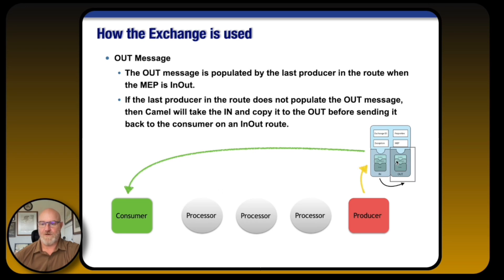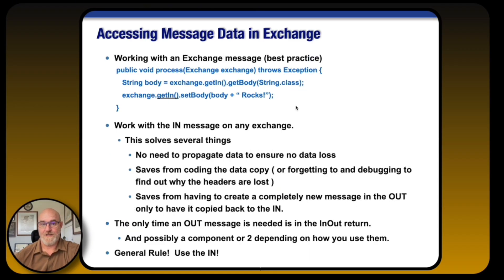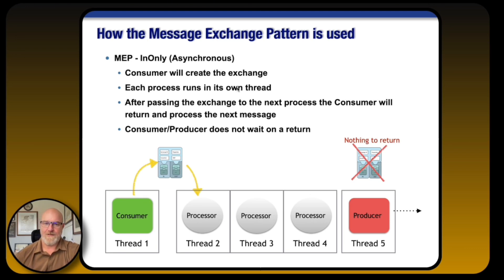If you've put something in the out, Camel will use that. For example, if a processor grabs the body, adds 'body rocks', and sets it to out, Camel will overwrite the in with this new body. That may be fine in some circumstances, but unless you copy the headers and attachments from in to out, you're going to lose them. Best practice: always work with getIn(). This way you know anything you're setting doesn't affect anything else within the message — all your headers and attachments are saved. General rule: always use the in.